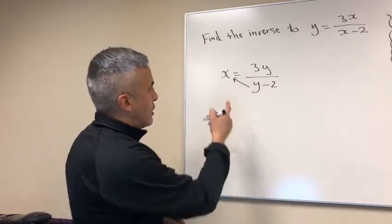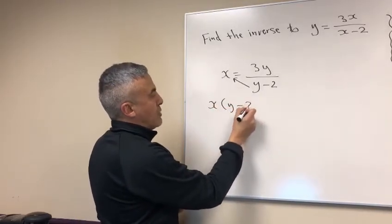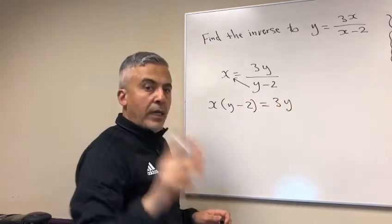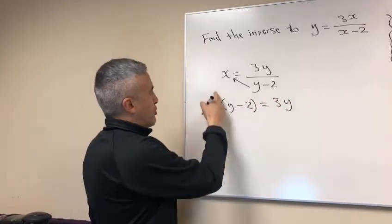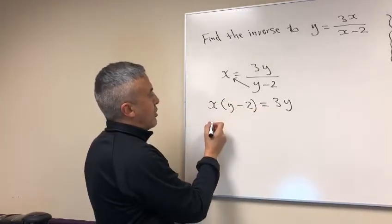Therefore, I'm gonna have x multiplied into y minus 2, and I'm left with 3y. Now your key to solve this question is to put the x right through, substitute it or distribute it, sorry. So that will give you xy minus 2x equals 3y.